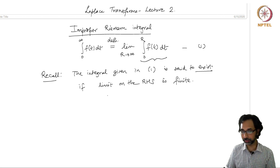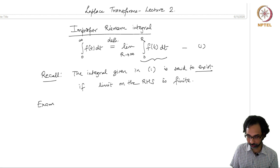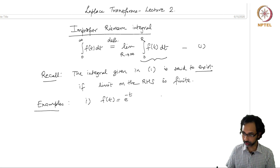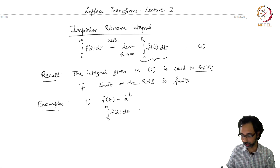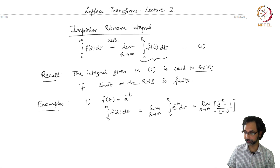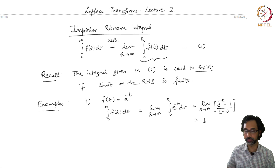To see some examples and non-examples of the improper Riemann integral, let us take the following example which we have already seen. First, f(t) = e^(−t). We compute ∫₀^∞ f(t)dt as the limit as R goes to infinity of ∫₀ᴿ e^(−t)dt, which gives the limit of (e^(−R) − 1)/(−1). This final limit exists because the exponential raised to a negative power decreases to 0 as R goes to infinity, so the result is 1.